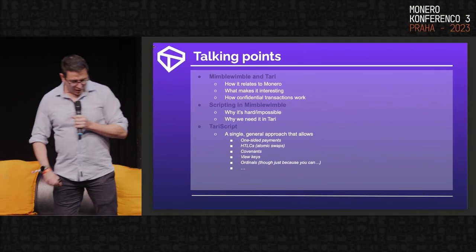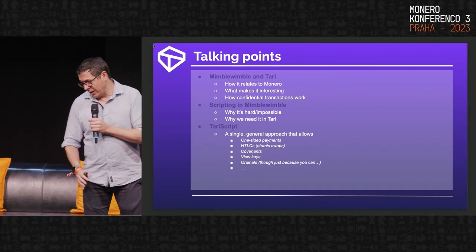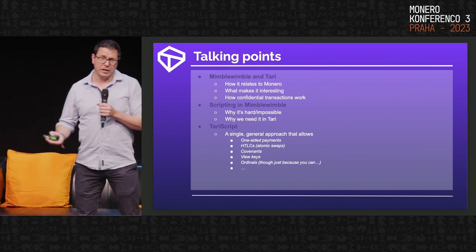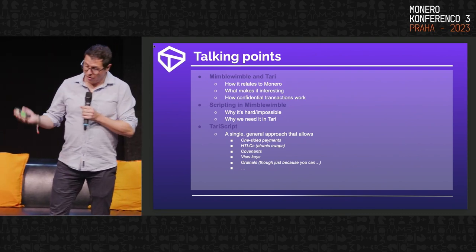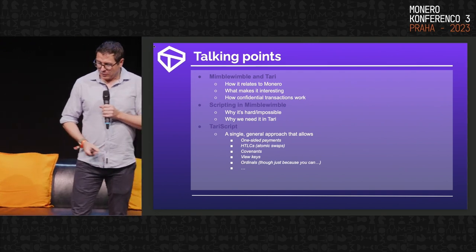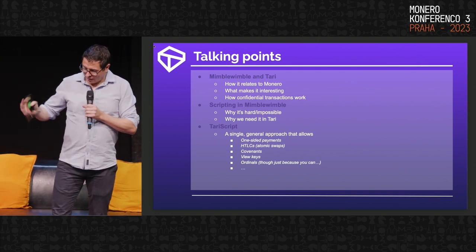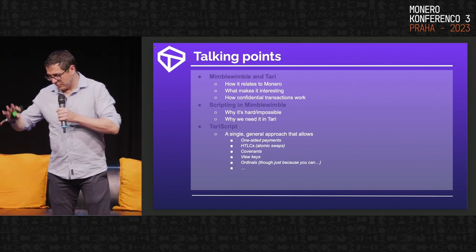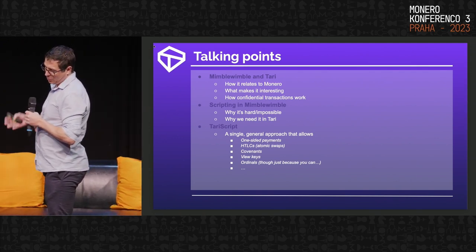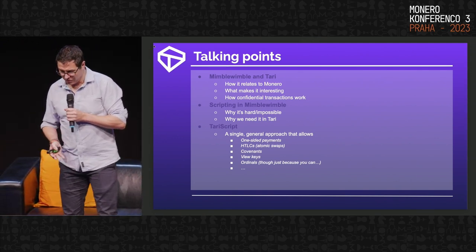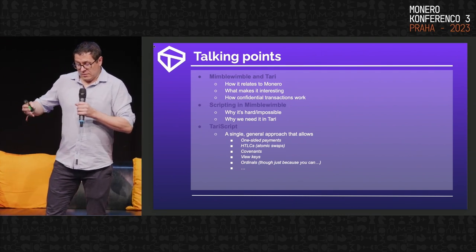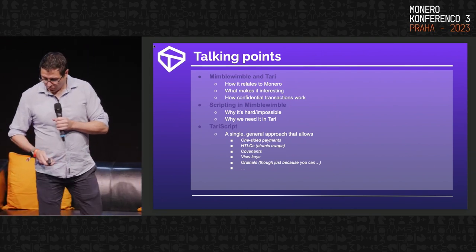So the roadmap for the talk. Before I can talk about Tari Script, I have to introduce Mimblewimble in Tari. This is a Monero crowd, and I assume not everyone here is aware of what Mimblewimble is. So I'm going to take a little bit of a dive into Tari, how it relates to Monero, what makes it interesting, how confidential transactions work, and why it's hard to do scripting in vanilla Mimblewimble.